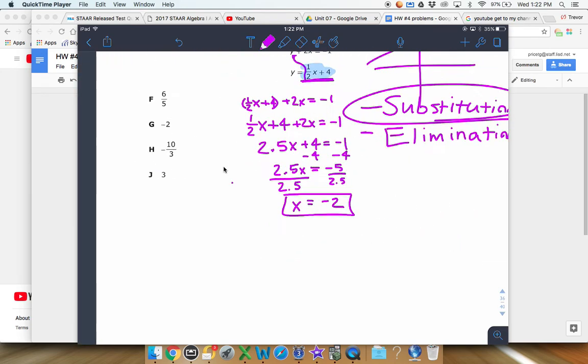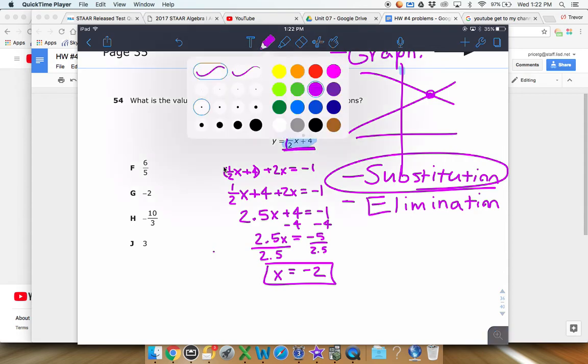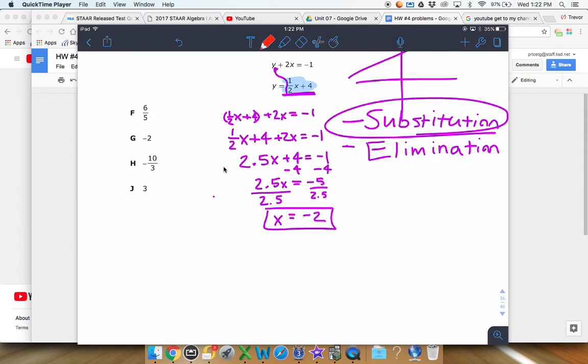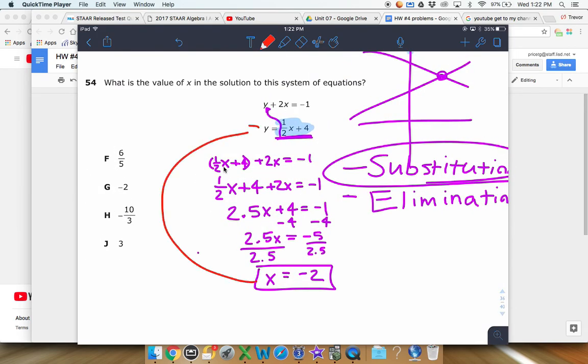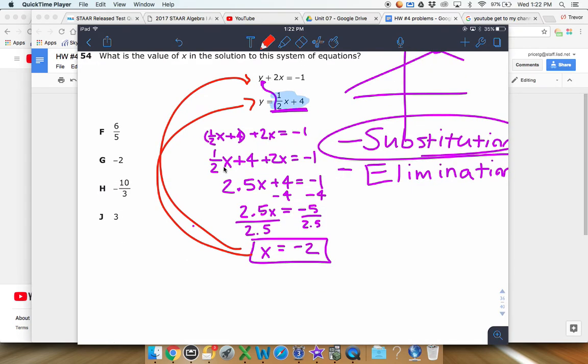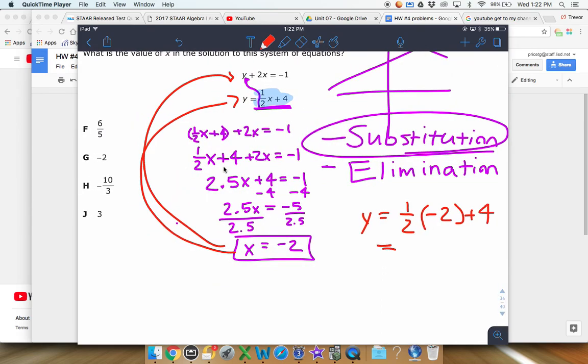And that is your x value. Now in this situation they're only asking for the x, but typically when we do these in class they also ask for the y value, so I'm just going to quickly show you guys that. To find the y value, you go plug your x back into either equation and it doesn't matter which one. Once again, they're not actually asking for this in this problem here, but I just want to show you here real quick just in case you're a little confused on that. So half of negative 2 is negative 1, and then we have negative 1 plus 4 is equal to 3. So there's your y value.